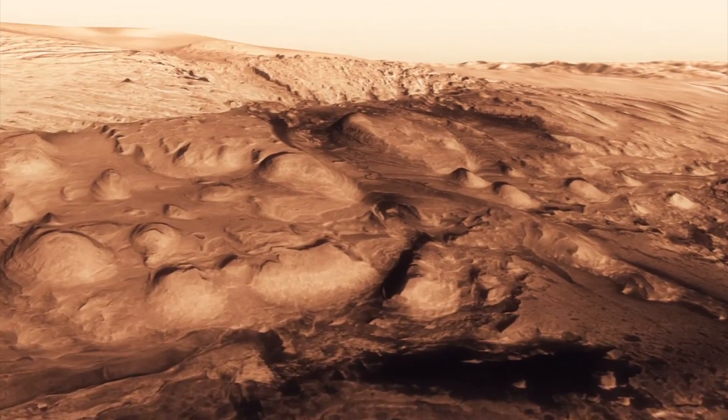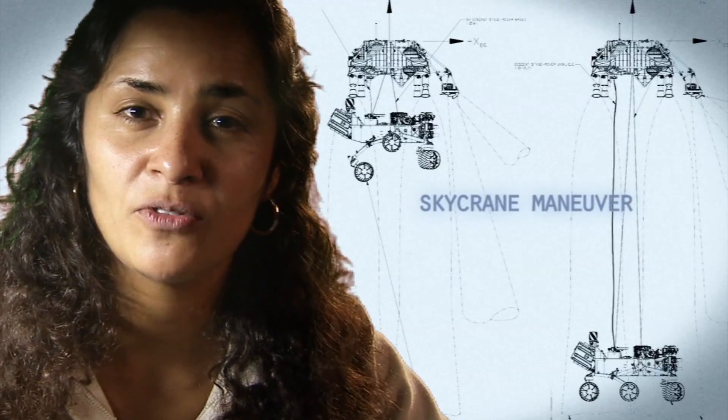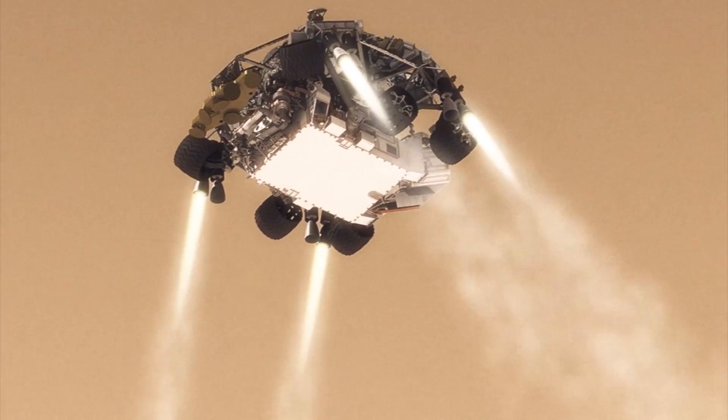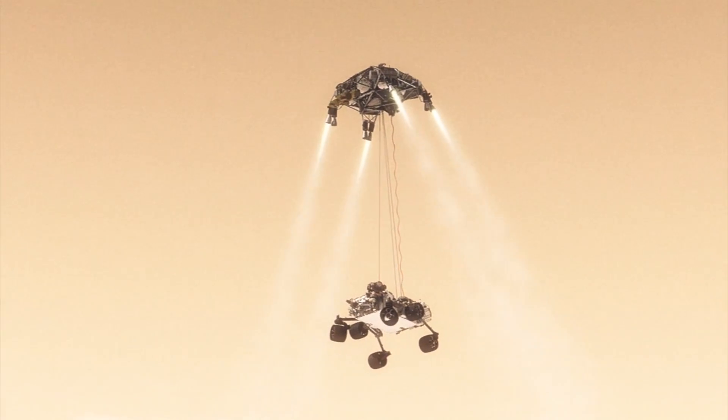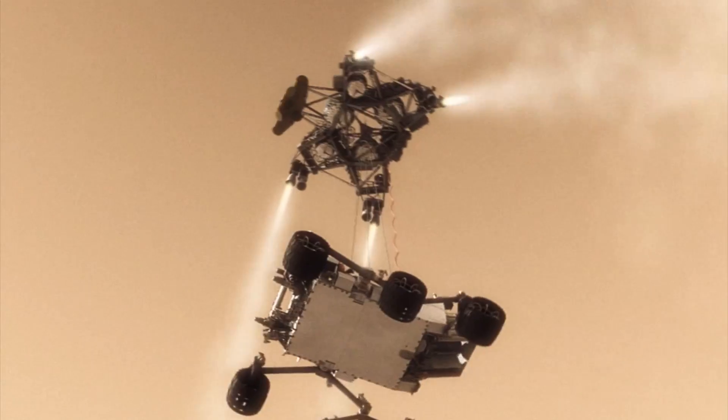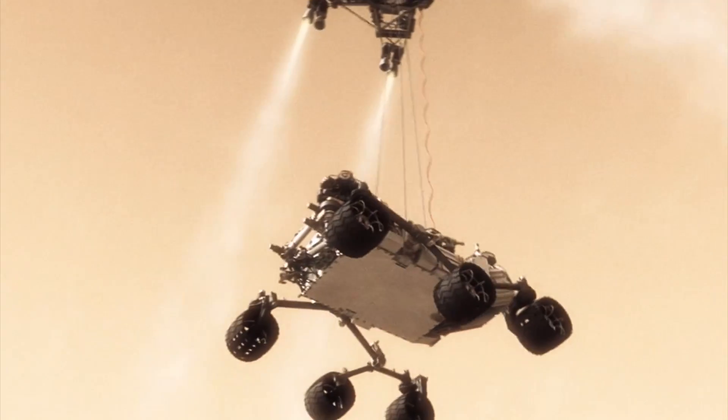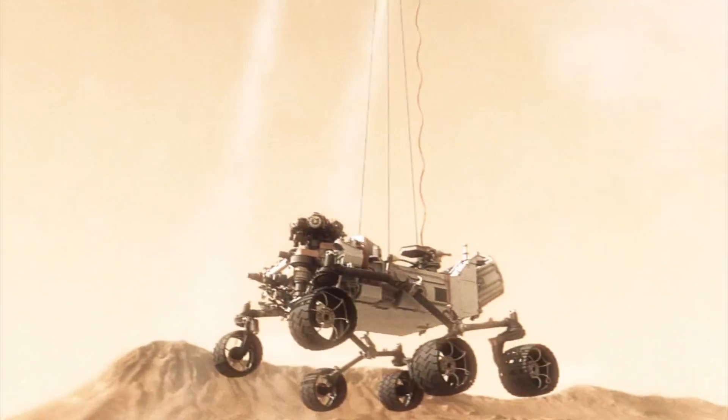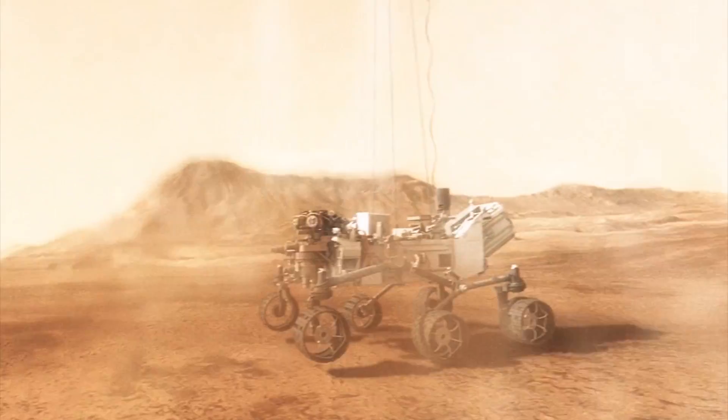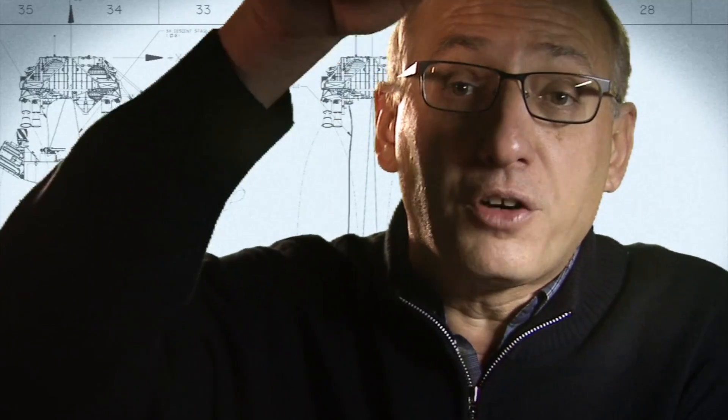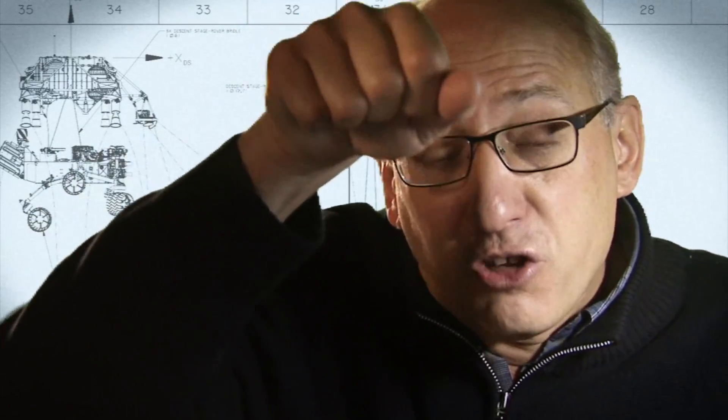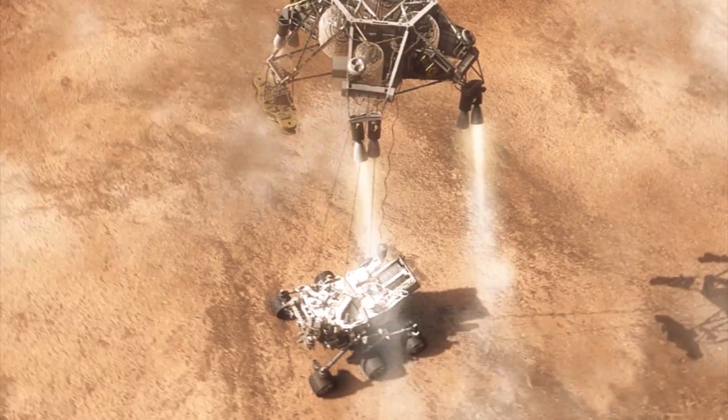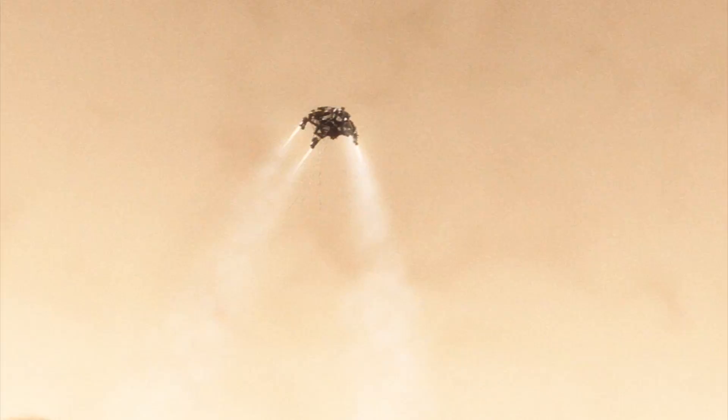So the way we solve that problem is by using the sky crane maneuver. 20 meters above the surface, we have to lower the rover below us on a tether that's 21 feet long and then gently deposit it on its wheels on the surface. As the rover touches down and is now on the ground, the descent stage is in a collision course with the rover. We must cut the bridle immediately and fly the descent stage to a safe distance from the rover.